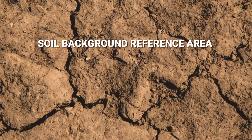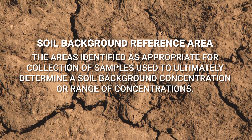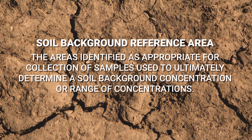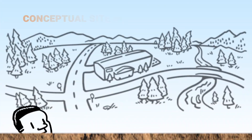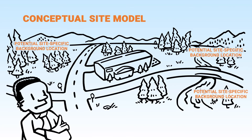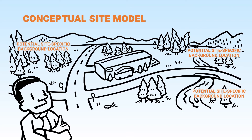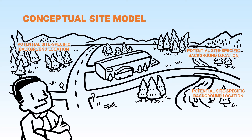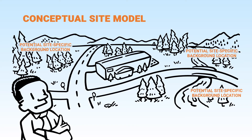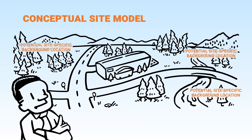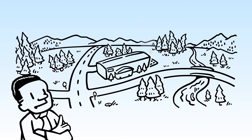Soil background reference areas are the areas identified as appropriate for collection of samples used to ultimately determine a soil background concentration or range of concentrations. Choosing the background reference area starts with the conceptual site model, referred to as a CSM. The CSM provides the site context including land use, geochemical, and chemical considerations, and a basis for selecting background reference areas that reflect similar inputs minus site release impacts.